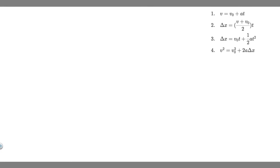In this problem we're told the ball is thrown directly downward with an initial speed of 8 meters per second from a height of 30 meters. At what time interval does it strike the ground? Let's go ahead and draw what's going on here. So imagine we're on this building — the ball is going to be thrown directly downwards with a speed of 8 meters per second.